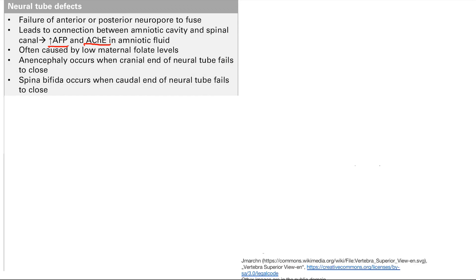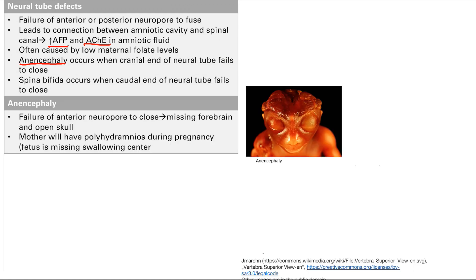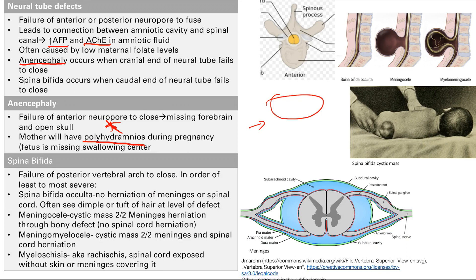When the cranial — anterior — end of the neural tube fails to close, that's called anencephaly. Spina bifida is when the caudal, or posterior, end of the neural tube fails to close. Anencephaly is failure of the anterior neural port to close — the brain side — so the baby is missing a forebrain and has an open skull. The mother will notably have polyhydramnios because the baby is missing the swallowing center in the brain, so it's not swallowing, leading to excess amniotic fluid.